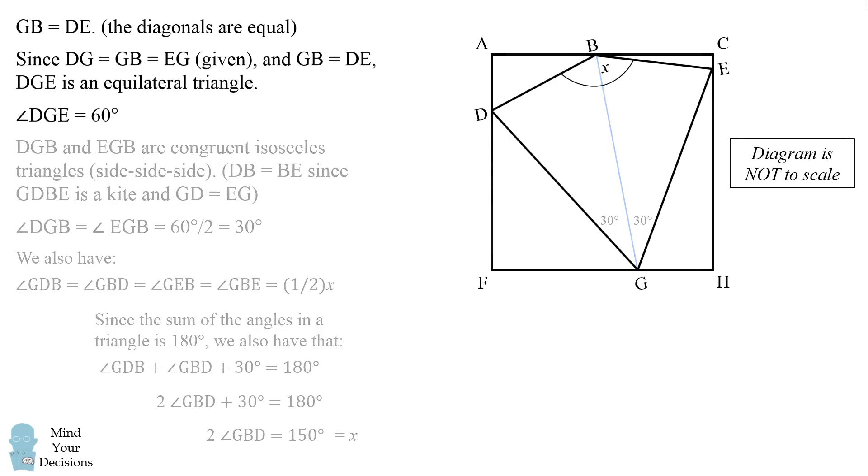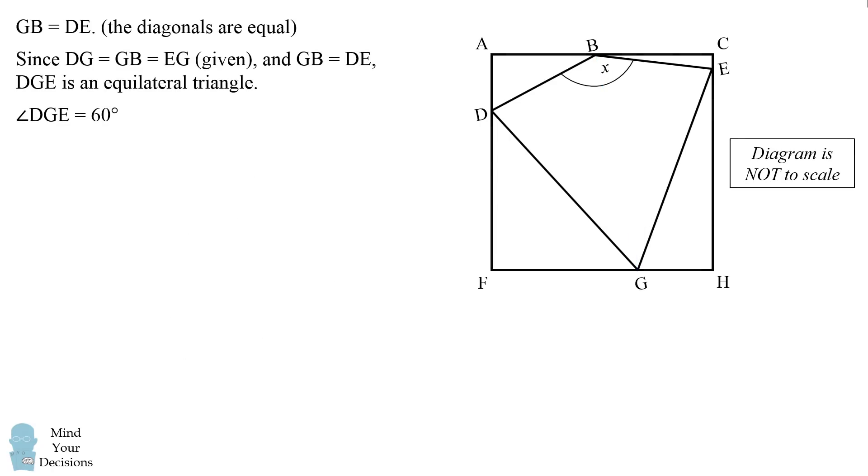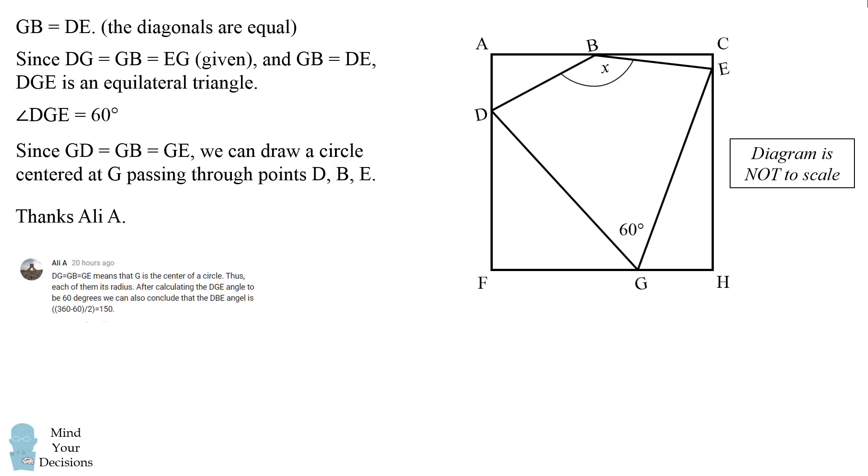There's also another way you could have solved this problem after figuring out the diagonals are equal, and that angle DGE is 60 degrees. Since GD is equal to GB equals GE, we can draw a circle centered at G passing through points D, B and E. These will be the radius of the circle. I thank Ali A for pointing this out in the comment.